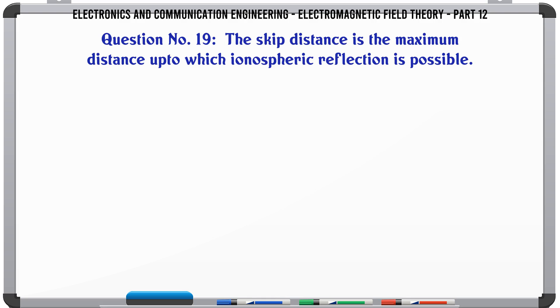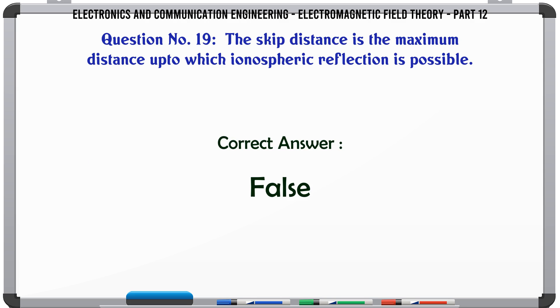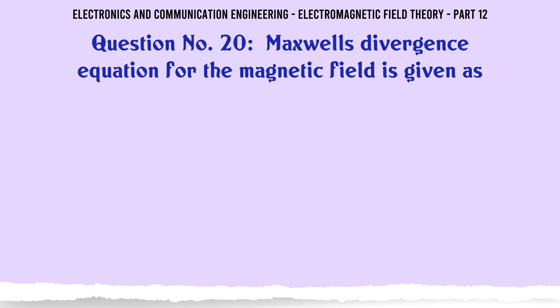The skip distance is the maximum distance up to which ionospheric reflection is possible: A. True, B. False. The correct answer is False.